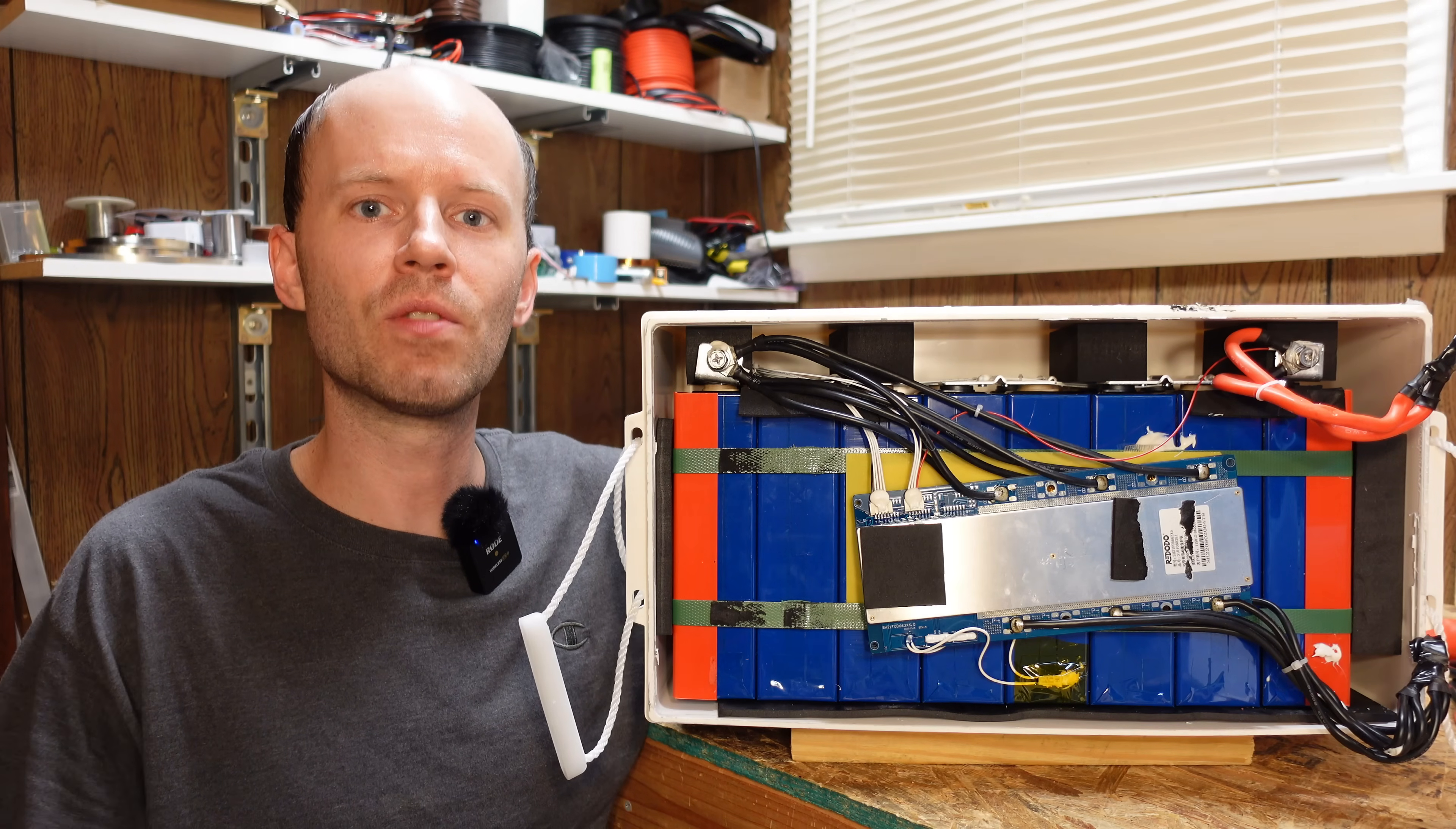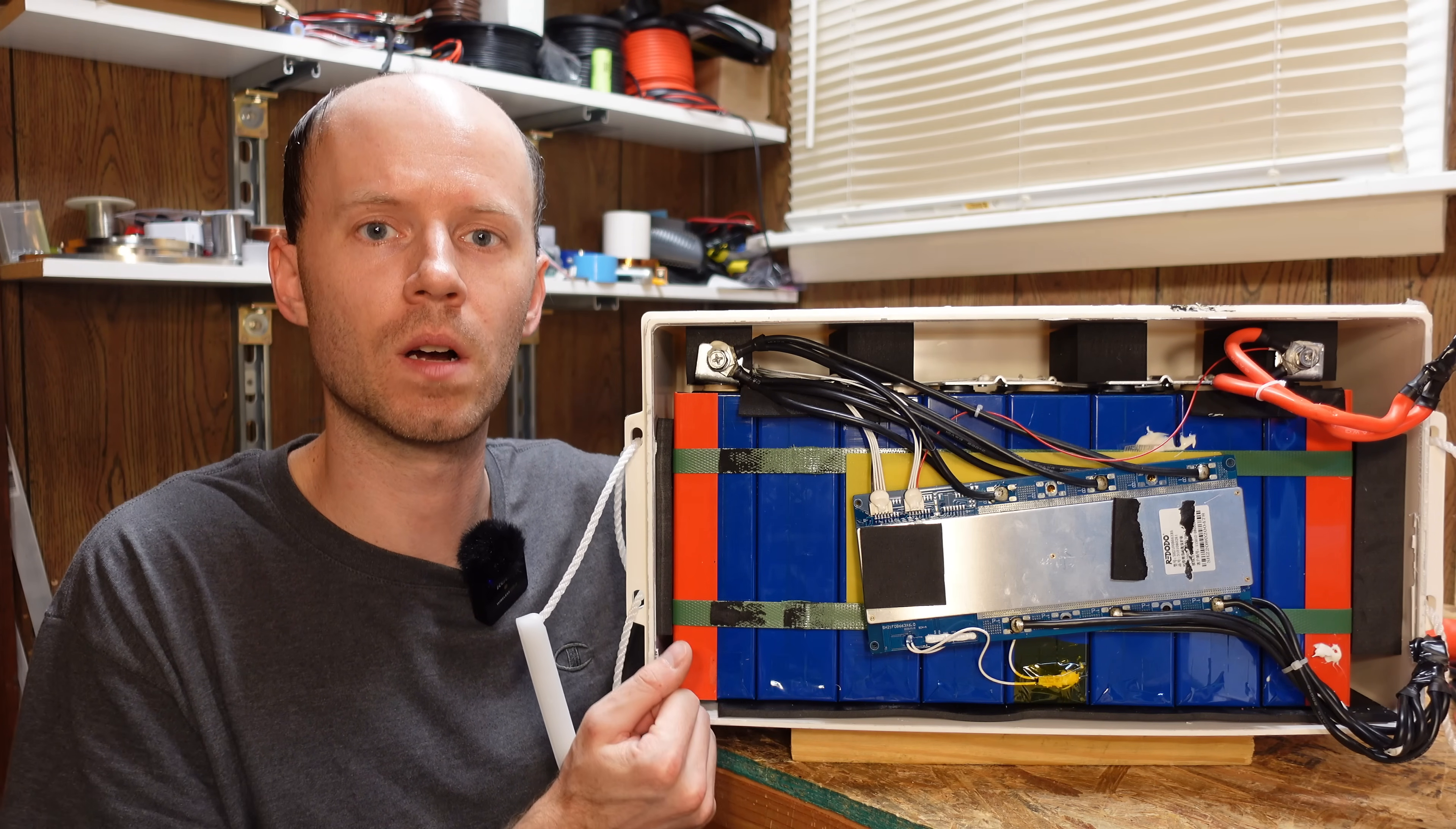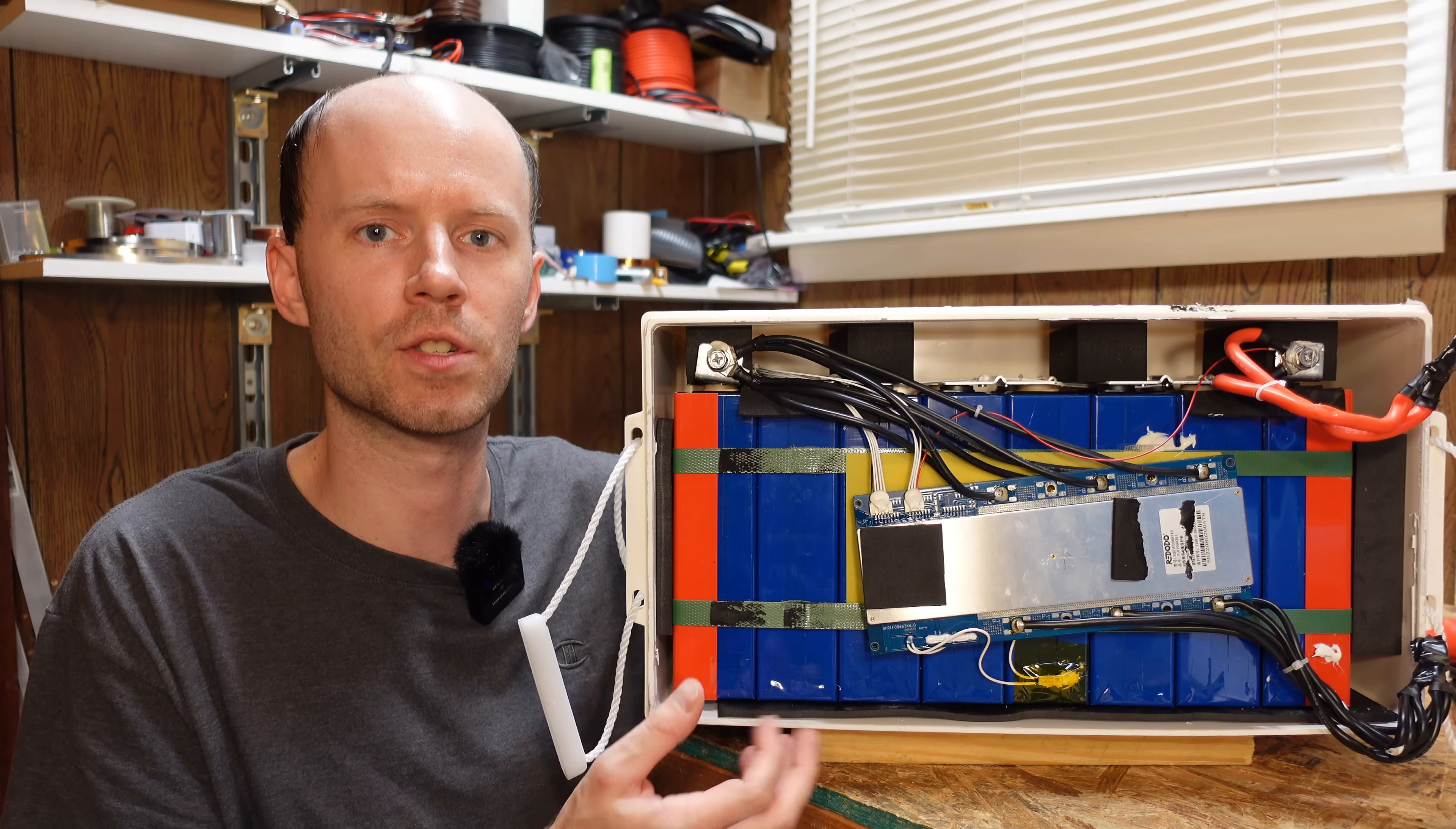All right, so there we go. The Red Oto 24 volt, 200 amp hour lithium iron phosphate battery. This is built very well considering it is a more budget friendly battery. We have GFP cells that will likely last a long time. We have their own BMS. This is a very basic BMS, but it does what it needs to. The only thing it does not have that would make this battery absolutely perfect, in my opinion, is a low temperature charge protection.